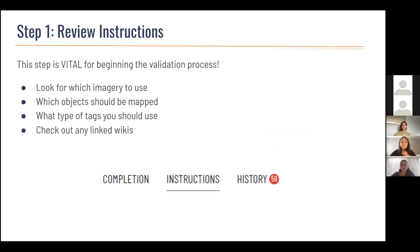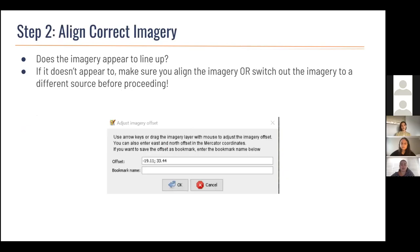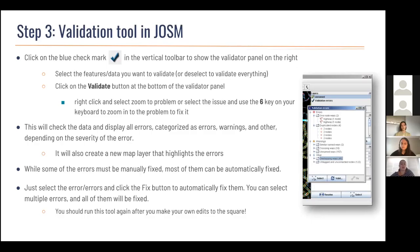Step one is to always review the instructions — this step is vital to beginning the process of validating. The instructions tell you what imagery you should be using, the types of objects you should be mapping, whether that's just roads or roads and buildings. It tells you what type of tags you should be using and to check out any linked wikis about the project. After you read the instructions, you should know which imagery to use. If the instructions don't state a specific imagery, try each one to see which best fits what has already been mapped. If the imagery doesn't appear to line up correctly, make sure you align the imagery or switch to a different source before you continue to validate.